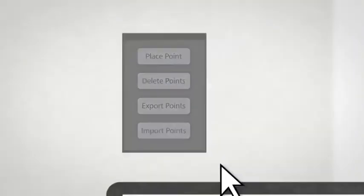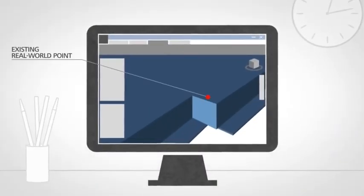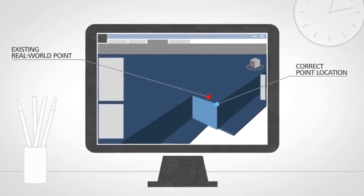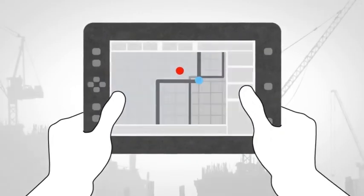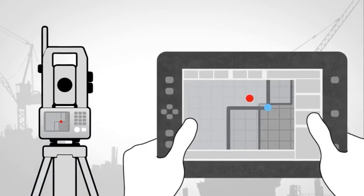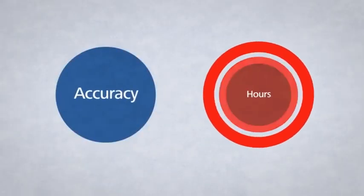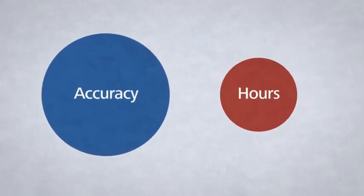By sending data to and from the field, Point Layout not only helps to improve the speed and accuracy of installation, it also captures installed positions for quality control and assurance. Complete Layout with more accuracy and less man hours, helping to save time and money.